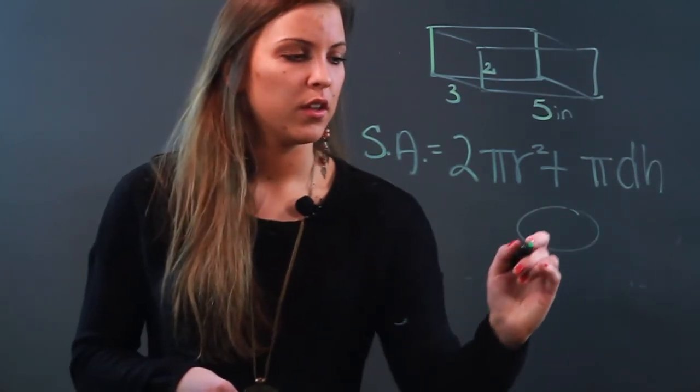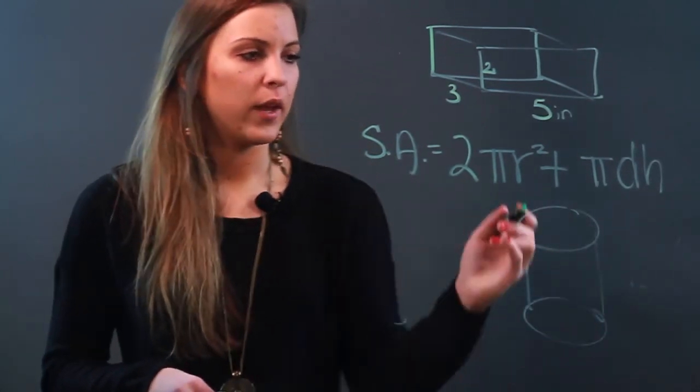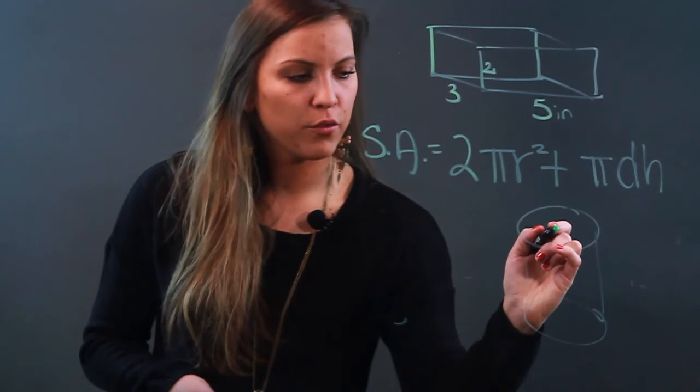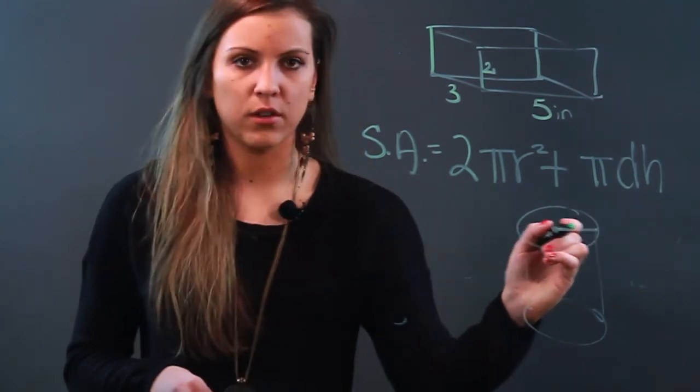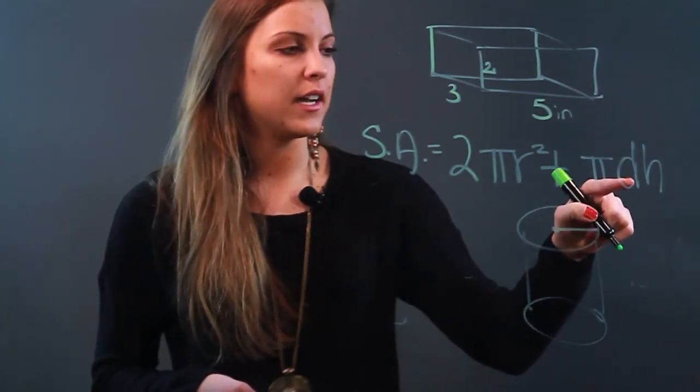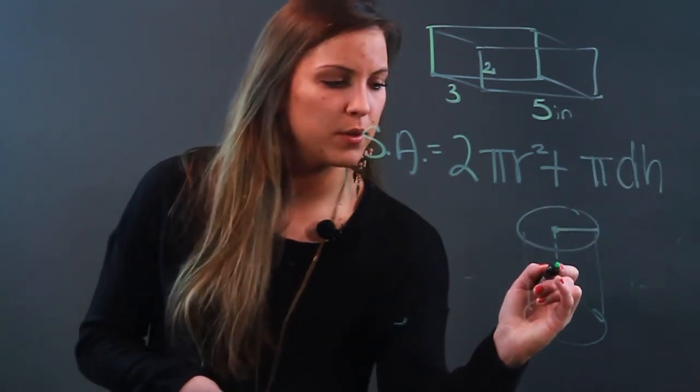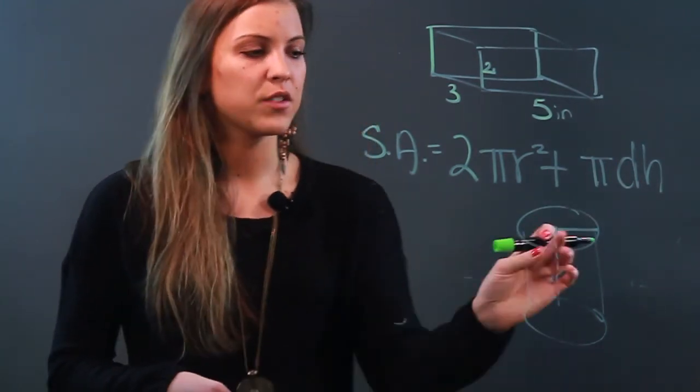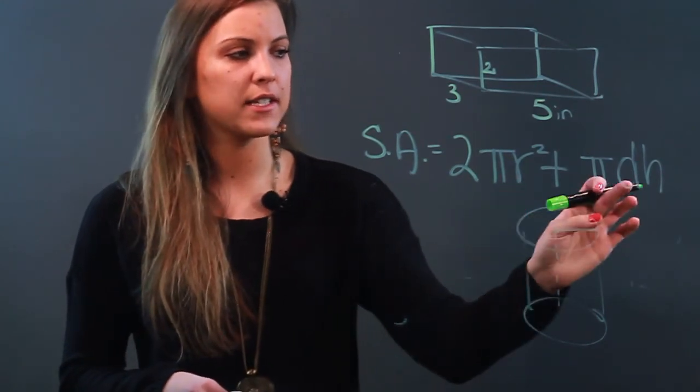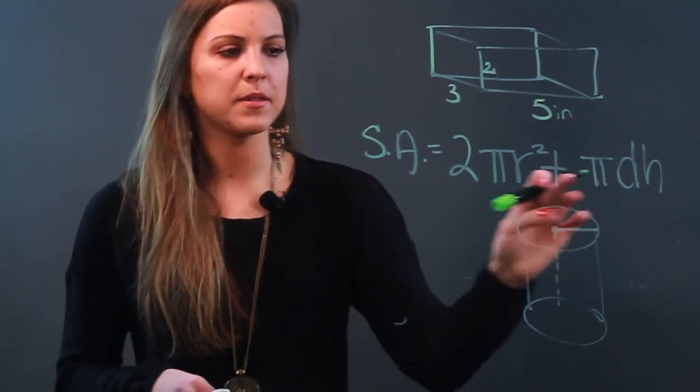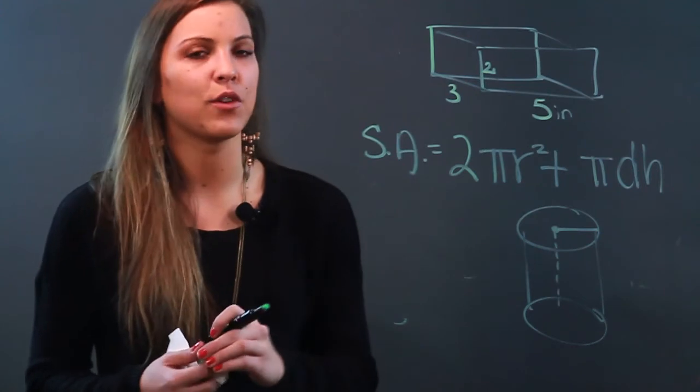So you have your cylinder. When I say r², I'm looking for the radius of this cylinder right here, so you need to know that value. Then the diameter is obviously just double the radius, and the height would be given to you as the height of the cylinder right there. So once you have those three values—the radius, the diameter, and the height—you can go ahead and substitute them into that formula to find the surface area of a cylinder.